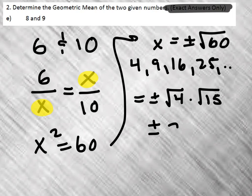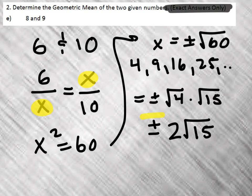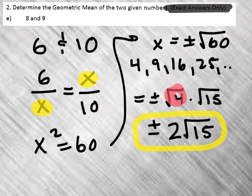And so this simplifies to 2 square root of 15. Do you see how I simplified that by obtaining a perfect square out of the number? And then the square root of 4 becomes perfectly 2 times the square root of 15. So do a similar thing for 8 and 9.